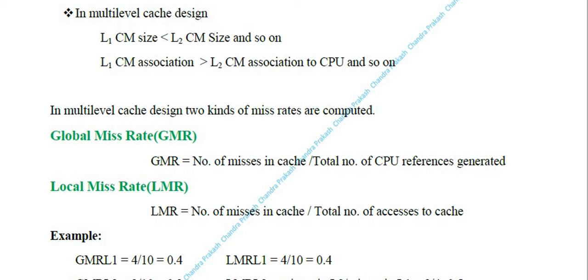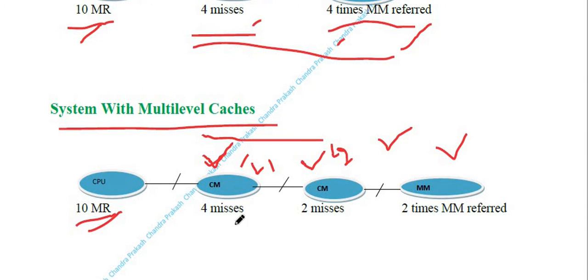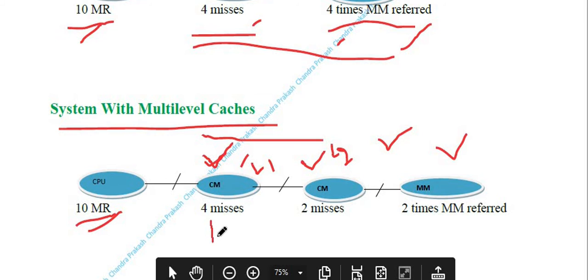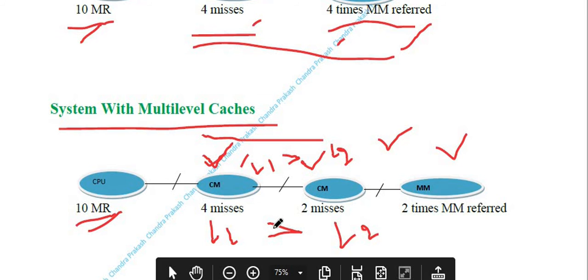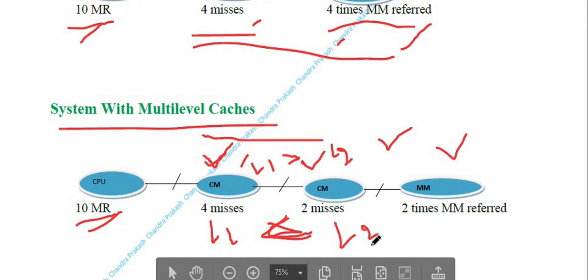In multi-level cache design, L1 cache size is less than L2 cache size. L1 cache is smaller but faster, while L2 is larger but slower. Because L1 has limited size, not all data can be present in L1 — some misses occur that are fulfilled by L2. Similarly, L2 has limited size, so remaining misses are fulfilled by main memory.